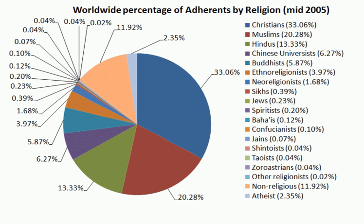Tantrism originated in the early centuries CE and developed into a fully articulated tradition by the end of the Gupta period. According to Michaels, this was the Golden Age of Hinduism, c. 320–650 CE, which flourished during the Gupta Empire 320–550 CE until the fall of the Harsha Empire 606–647 CE. During this period, power was centralized, along with a growth of far-distance trade, standardization of legal procedures, and general spread of literacy. Mahayana Buddhism flourished, but the orthodox Brahmana culture began to be rejuvenated by the patronage of the Gupta dynasty. The position of the Brahmins was reinforced, and the first Hindu temples emerged during the late Gupta age.